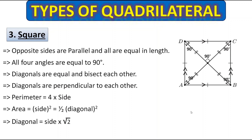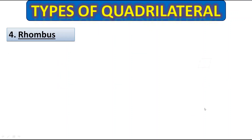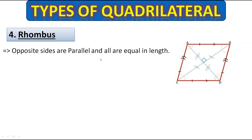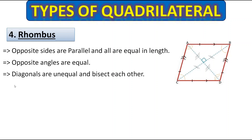Now let's move to the next type, which is the rhombus. The properties of a rhombus are: opposite sides are parallel and all sides are equal in length. Opposite angles are equal — this angle and that opposite angle are equal, and the other pair are also equal. Diagonals are unequal but bisect each other, making each half of the other equal.